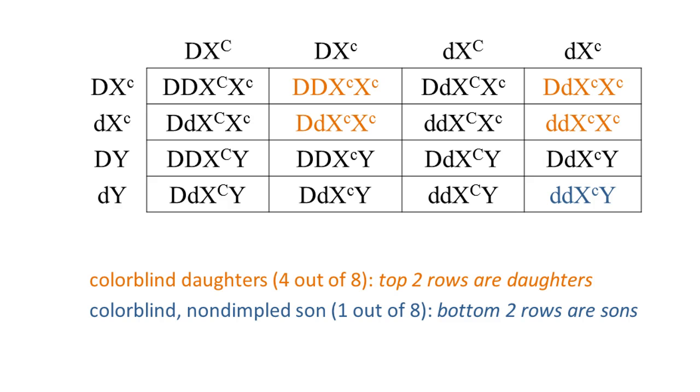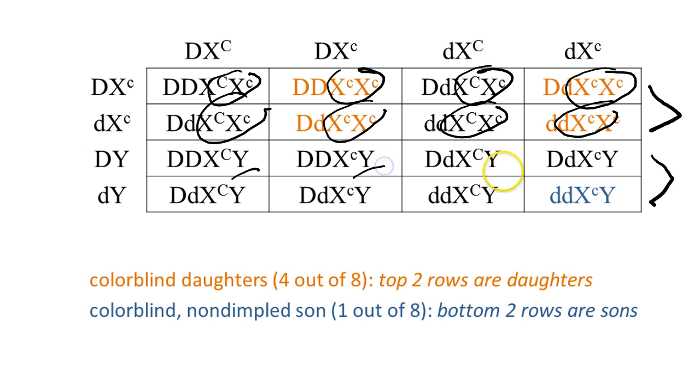Let's take a look at the results. It's easier to read them already pre-printed. If we look at the top two rows, we will see that these are all daughters. That is because in each one of these boxes, we have two X chromosomes. The bottom two rows are going to be the sons, because in each one of these cases, we see a Y chromosome.